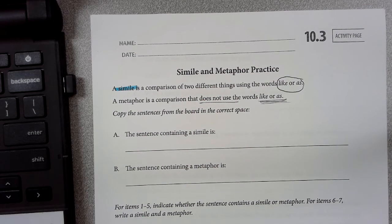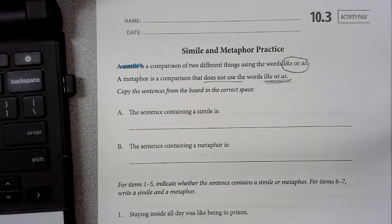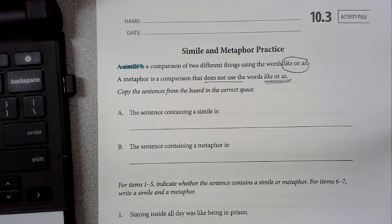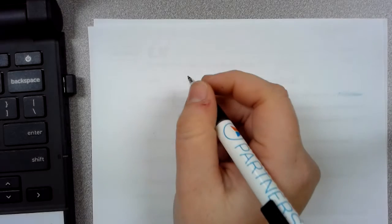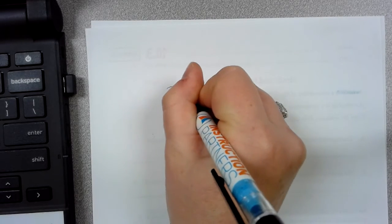So it says copy the sentences from the board in the correct space. So I'm going to write two sentences down. I'm going to do it on the back of this paper. And what I'm going to ask you to do is think which one's which. So we have: being...